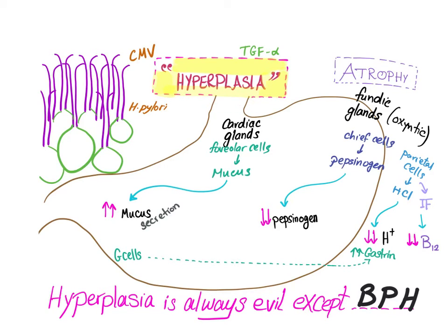This hyperplasia of the foveal cells will affect the other cells — it will compete with them, knock them off, so they will undergo hypoplasia and atrophy. Atrophy of the chief cells leads to less pepsinogen and less pepsin, because pepsinogen gets converted into pepsin.